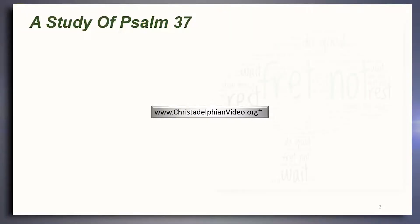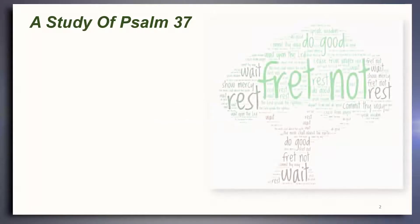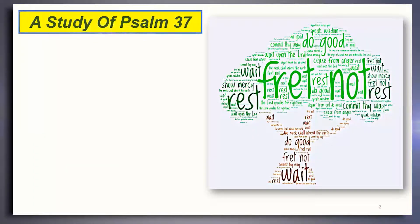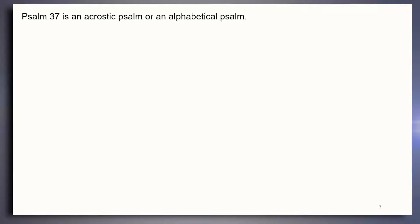There are a number of these in our collection of psalms. This is one of them — an alphabetical psalm. What that means is that the 22 letters of the Hebrew alphabet are used in turn all the way through from beginning to end, and the psalm is structured around those. So every two verses or so, we have the next letter in the Hebrew alphabet.